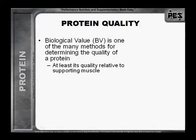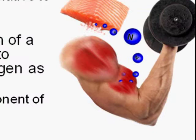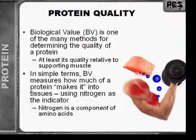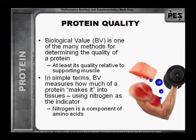The biological value, or BV, is one of the many methods for determining the quality of a protein — at least its quality relative to supporting muscle. In simple terms, BV measures how much of a protein makes it into tissues, using nitrogen as the indicator, because nitrogen is a component of amino acids.